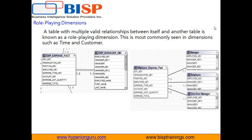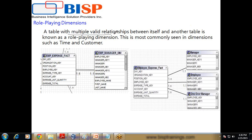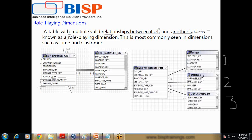In this example, if you go by the formal definition, a table with multiple valid relationships between itself and another table is known as a role playing dimension. In our case we have one table called employee expense fact table which talks about various kinds of expenses pertaining to employees, and there is another dimension called employee manager dim — basically an employee and manager detail dimension — joined with three keys.